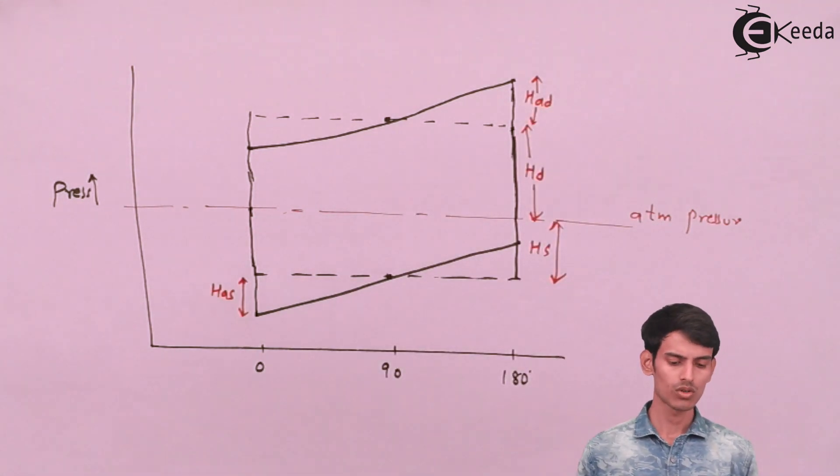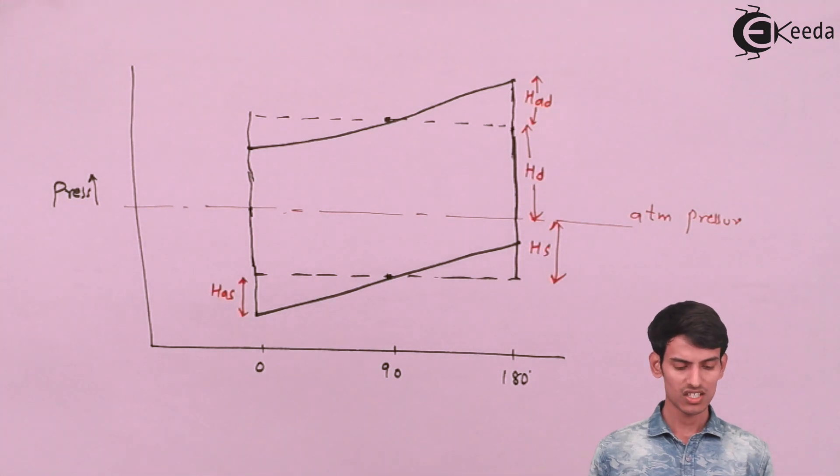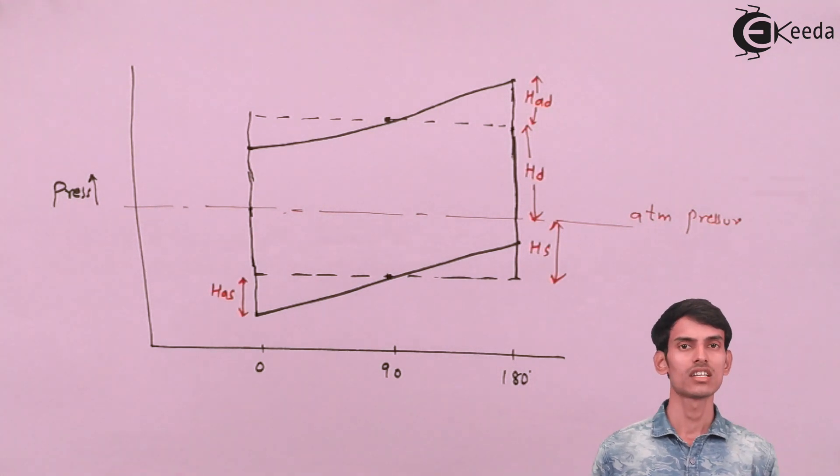This is how the whole graph looks like when you club both the indicator diagrams at the suction end and at the delivery end, including HS, HAS, HD, and HAD. This is how the pressure variation takes place.